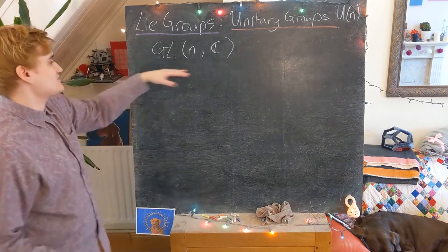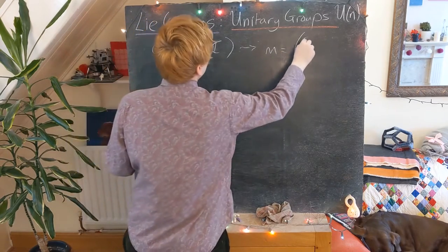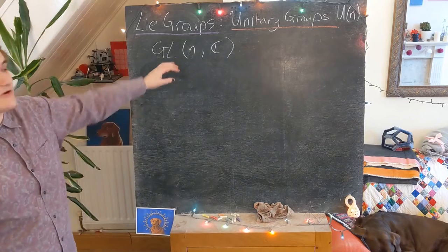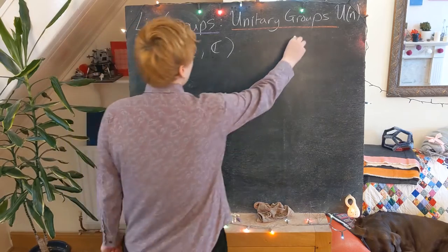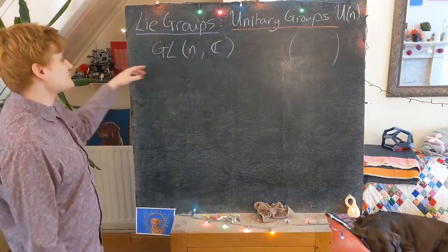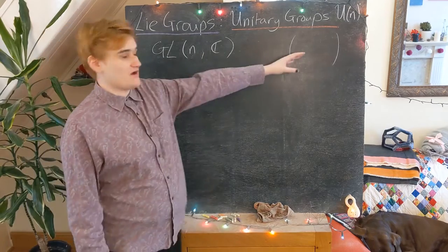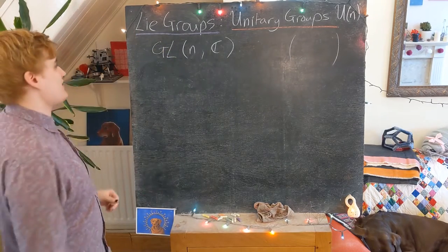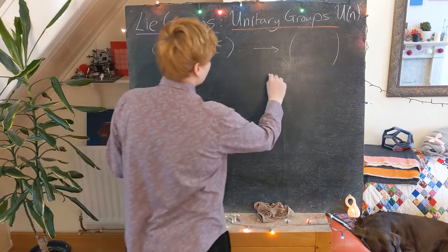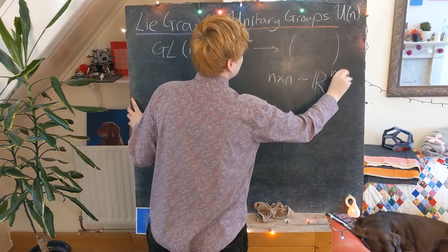The elements of GL(n,R) are n by n matrices, and we can view the matrix elements as essentially the charts for this manifold — each matrix element representing a copy of R. It's just a chart function that maps the abstract group element into its concrete representation as a matrix of numbers. So we can view an n by n matrix as being isomorphic to the manifold R to the n squared.